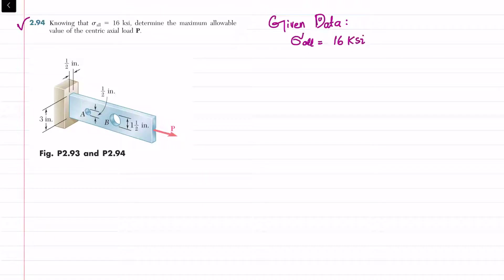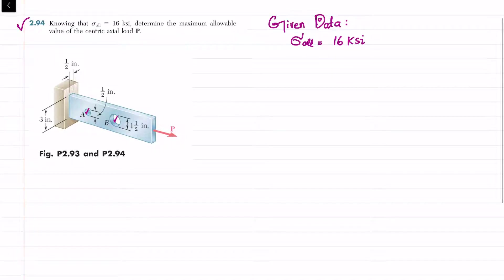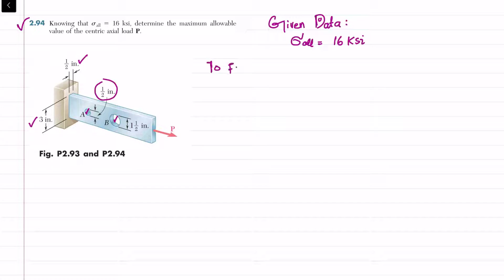All the data is given. This is a plate with a hole at B and a small hole at A. The diameter of hole A is 1/2 inch, while the diameter of hole B is 1.5 inch. The thickness of this plate is 0.5 inch and the width is 3 inch. We have to find the centric axial load P.